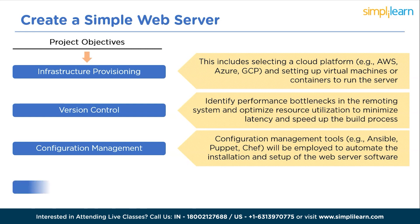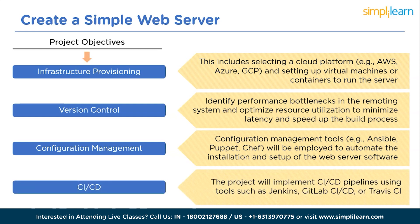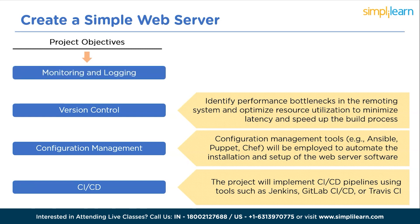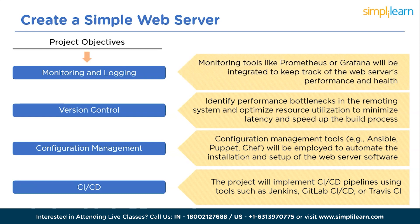The next is continuous integration and continuous deployment: the project will implement CI/CD pipelines using tools such as Jenkins, GitLab CI/CD, or Travis CI. Automated testing and deployment pipelines will be established to speed up the deployment process and ensure code quality. The next objective is monitoring and logging: tools like Prometheus or Grafana will be integrated to track the web server's performance, and logging solutions like the ELK stack — Elasticsearch, Logstash, Kibana — will be used to gather and analyze logs.